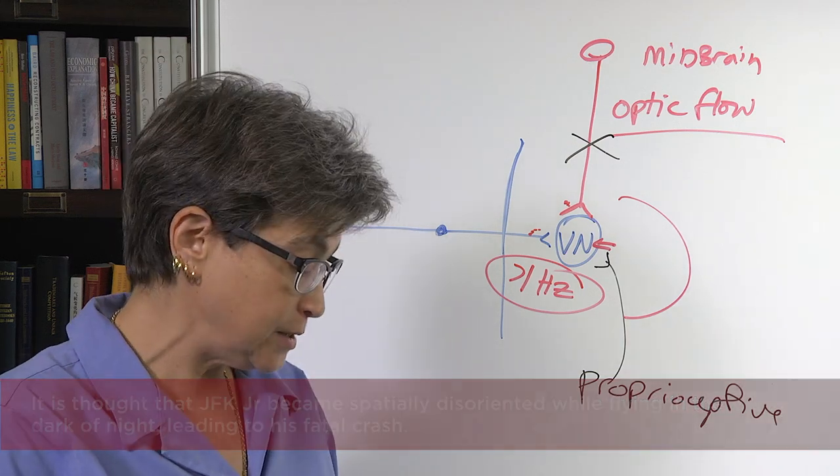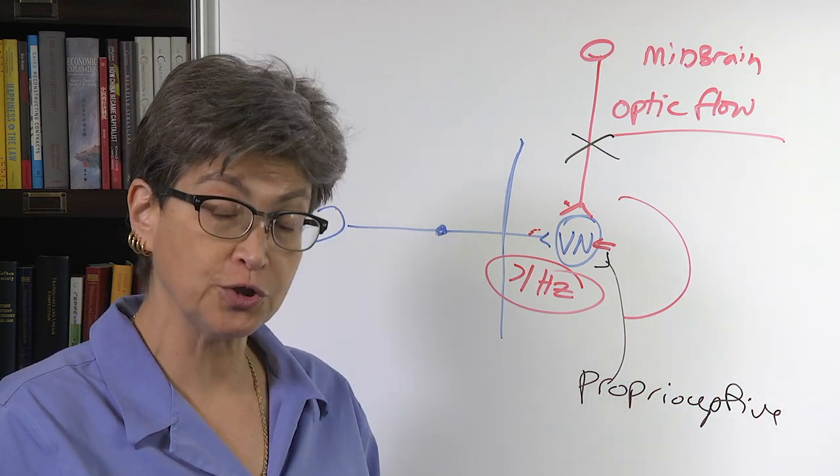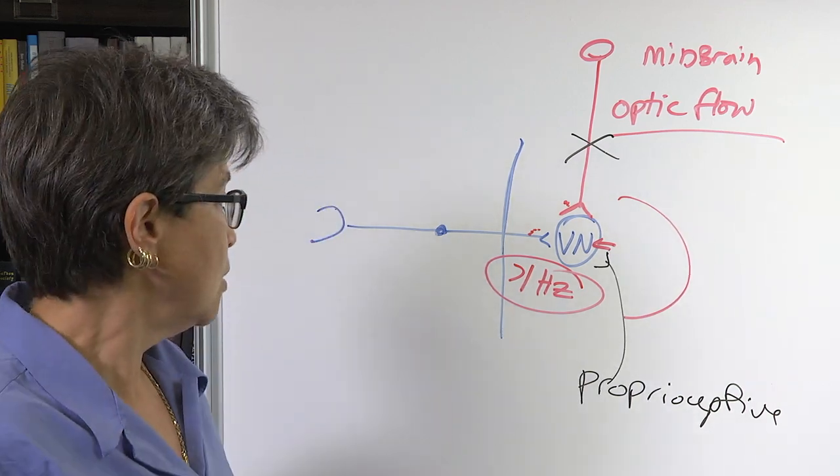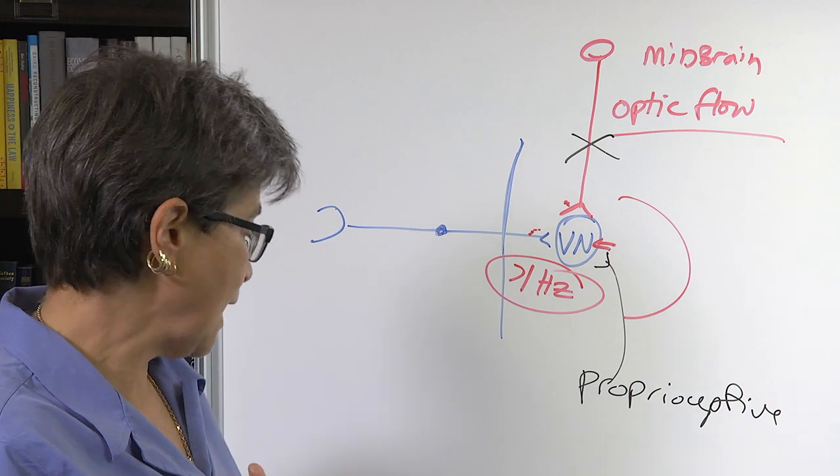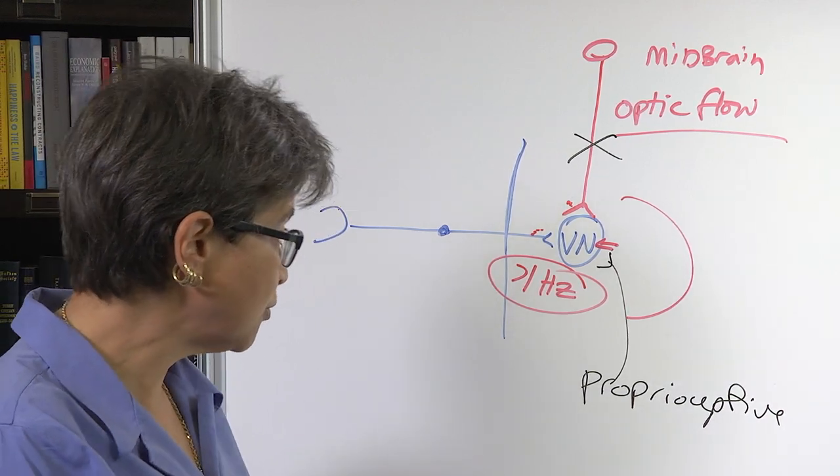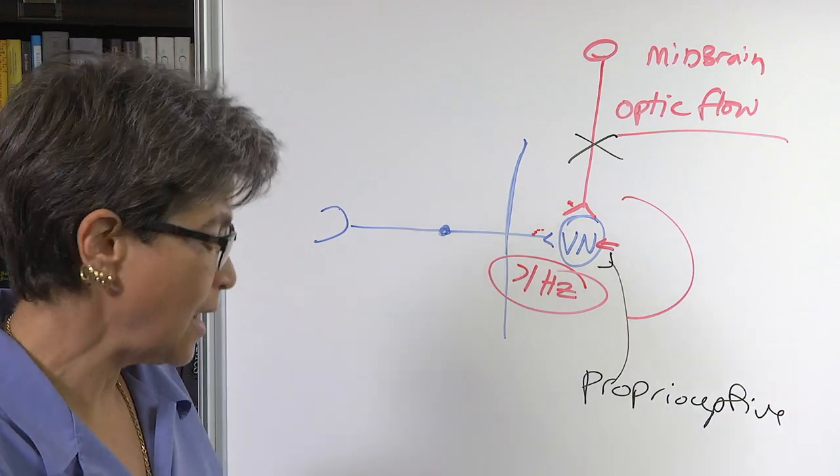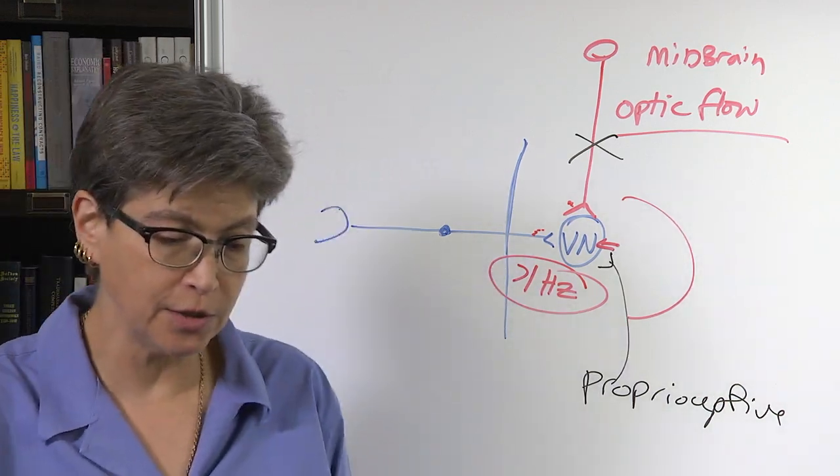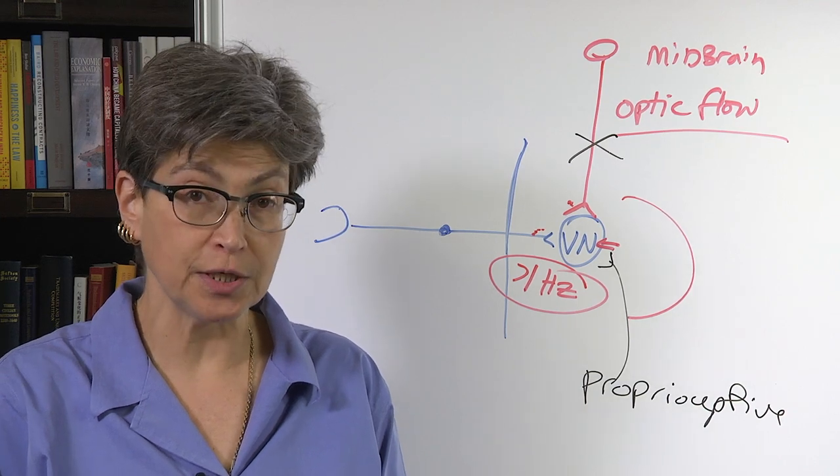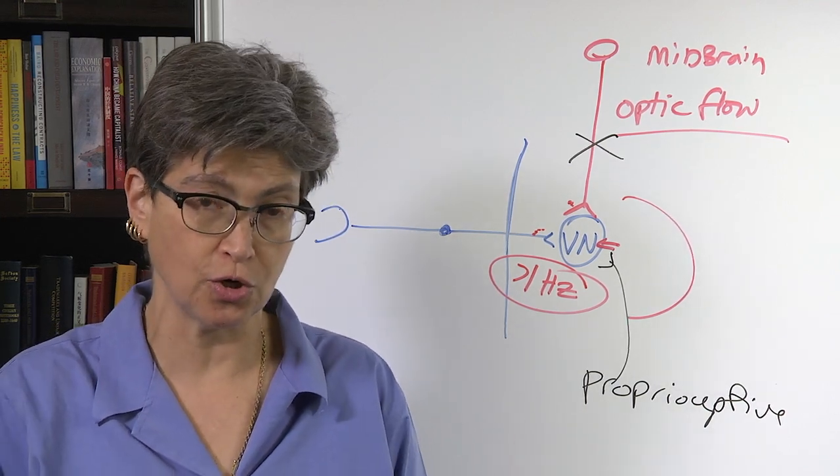And this does unfortunately result in fatalities. All right. Now, there's another input into here. And the way we can understand that input is to think about motion sickness. So why does motion sickness occur?